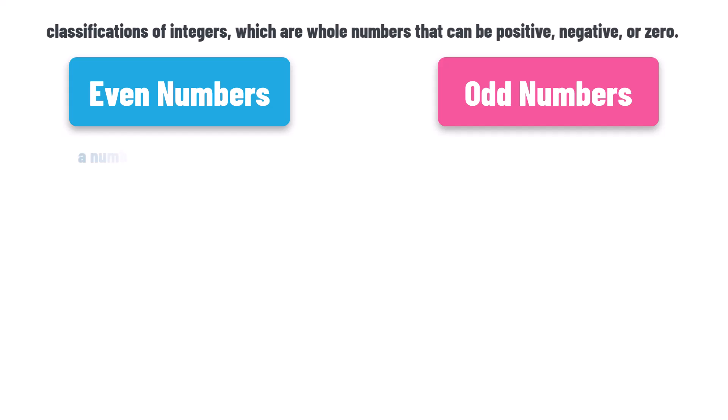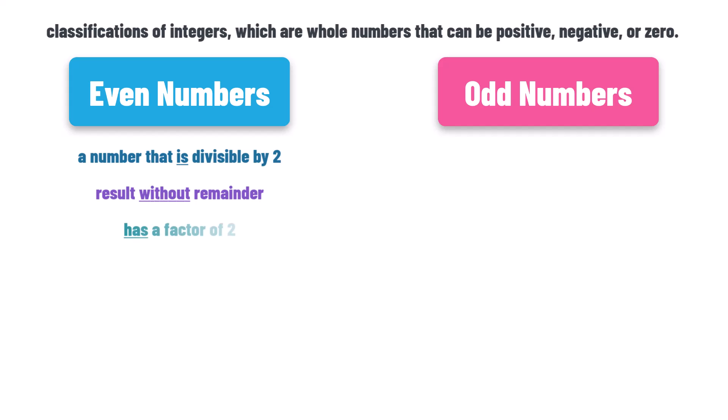An even number is a number that is divisible by 2. This means it can be divided by 2 without leaving a remainder. In other words, if we divide an even number by 2, we don't get a decimal number, but a whole number. So, an even number is a number that has a factor of 2.